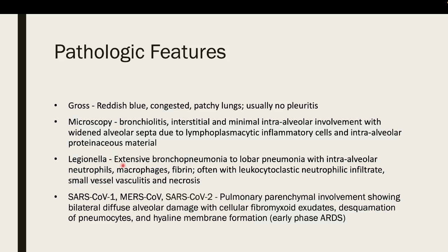For Legionella, it can cause extensive disease leading to extensive bronchopneumonia to lobar pneumonia, which sometimes appears indistinguishable from typical pneumonia, with intra-alveolar neutrophils, macrophages, fibrin, and leukocytoclastic neutrophilic infiltrates, with small vessel vasculitis and necrosis. The leukocytoclastic neutrophilic infiltrates represent small vessel vasculitis caused by the inflammatory reaction.